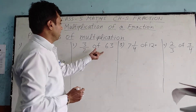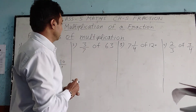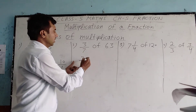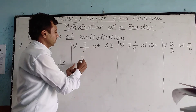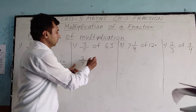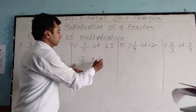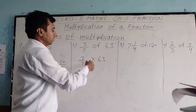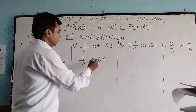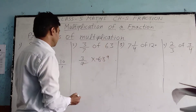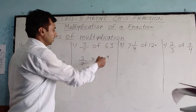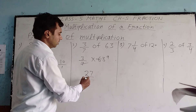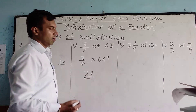Next question: 3 by 7 of 63. We change 'of' into a multiplication sign. We can cut 7 into 63, which gives 9. So we get 3 multiplied by 9, which equals 27. That is our answer.